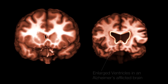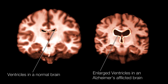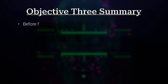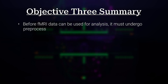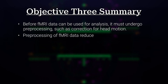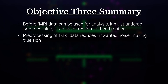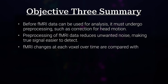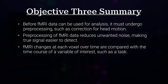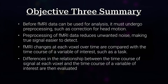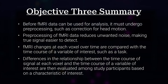In this section, we learned that before fMRI data can be used for analysis, it must undergo pre-processing such as correction for head motion. Pre-processing reduces unwanted noise, making true signal easier to detect. fMRI changes at each voxel over time are compared with the time course of a variable of interest, such as a task. Differences in the relationship between voxel signal and the variable of interest are then evaluated among study participants based on a characteristic of interest.